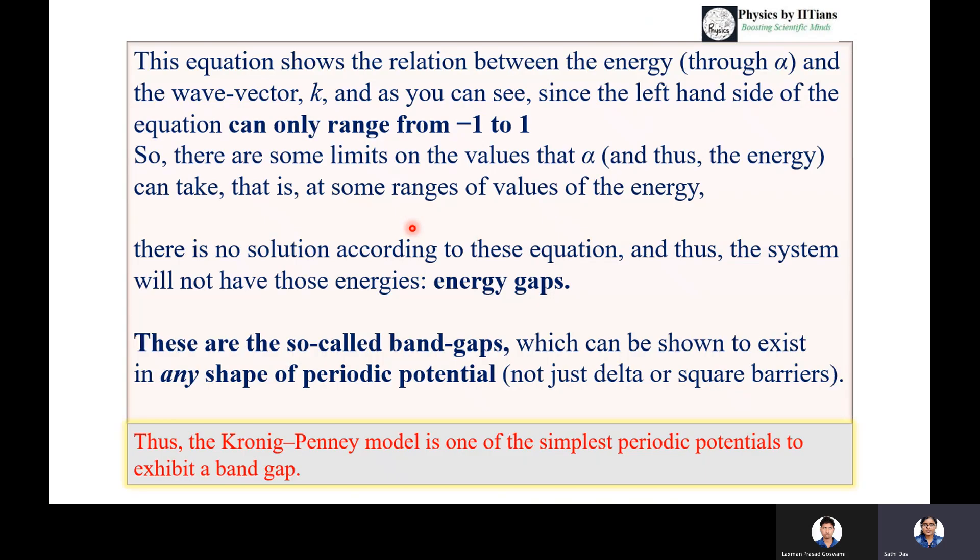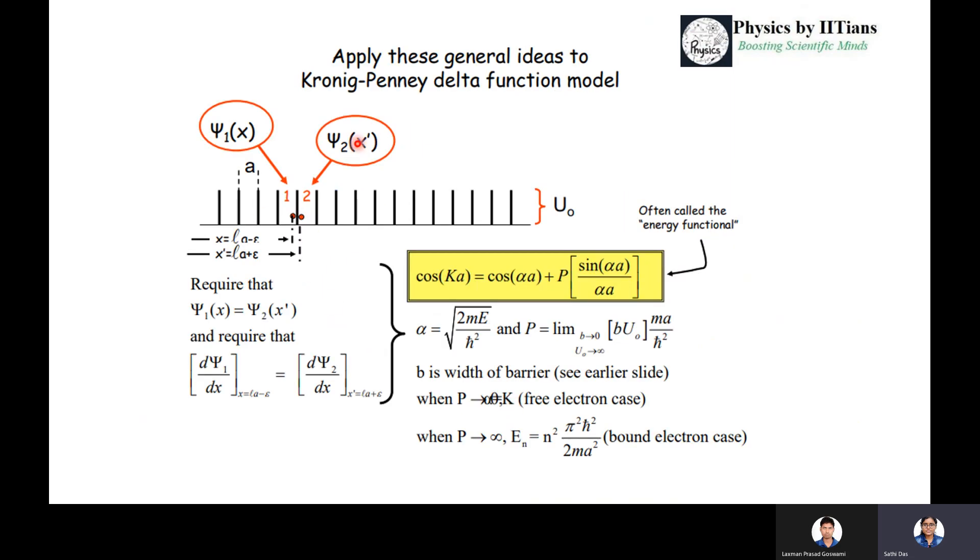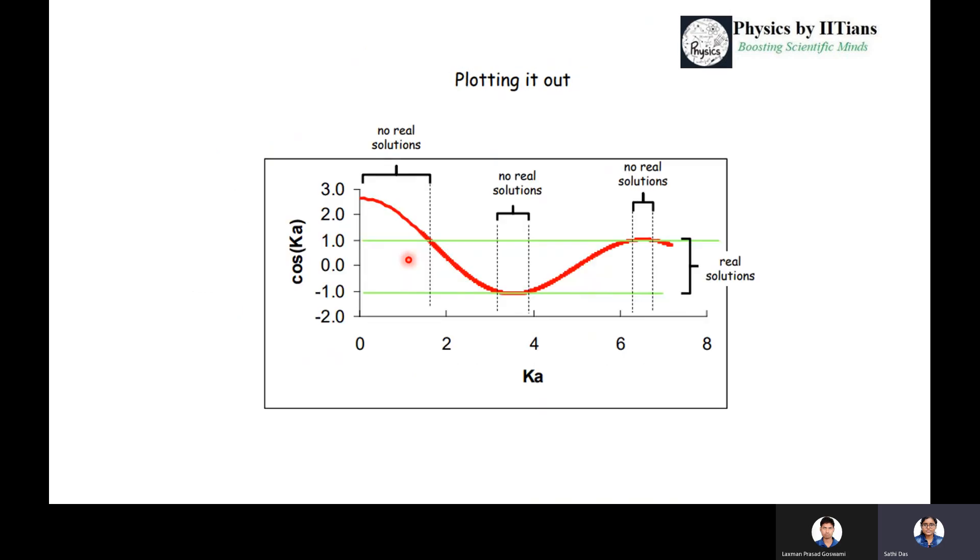This way you can find different energy levels. This equation shows the relation between the energy through α and the wave vector K. The left hand side of the equation can range from -1 to +1. So there are limits on the values that α can take - some ranges of energy values. When there is no solution according to this equation, that is called the energy gaps. These are called band gaps, which can be shown to exist in any shape of periodic potential. We have taken only the delta potential, but for any kind of potential, we can show there will be solutions which are allowed and not allowed.